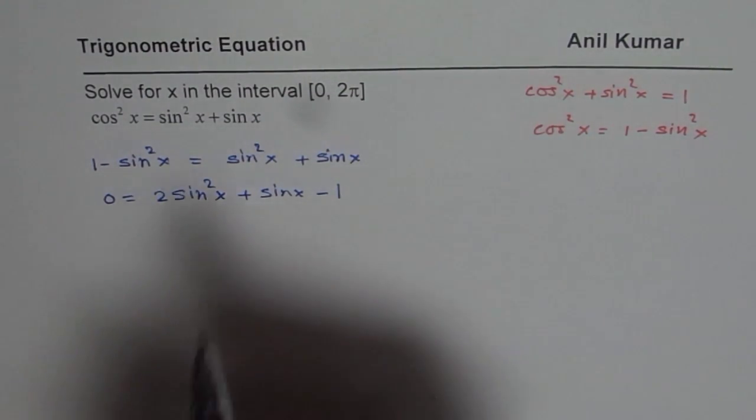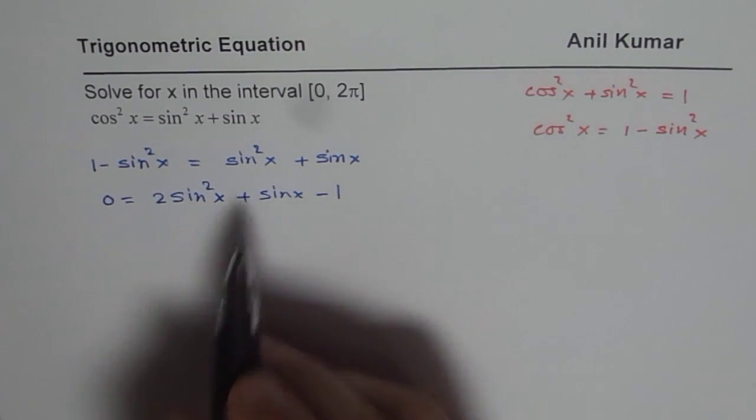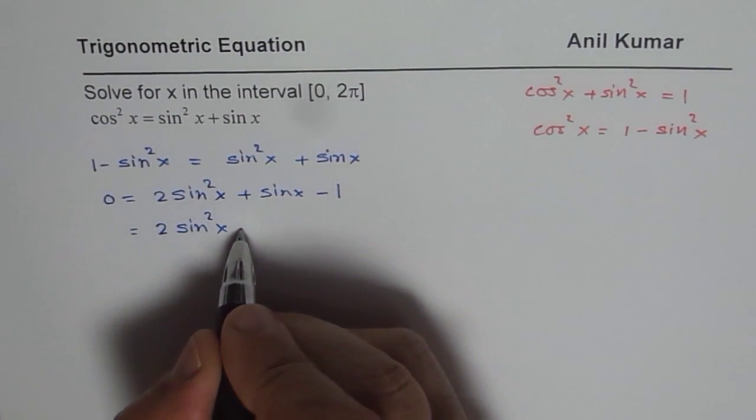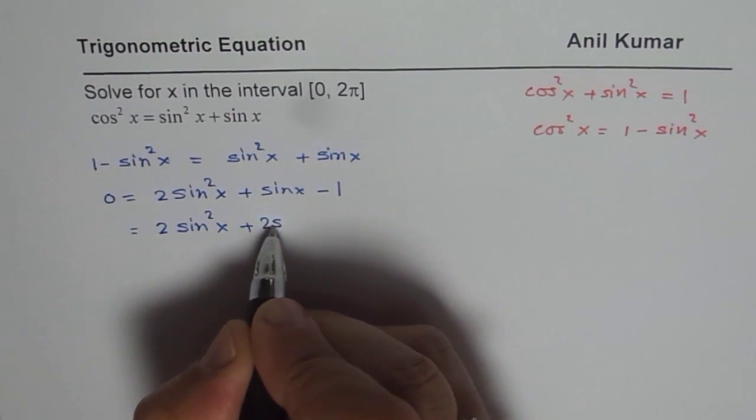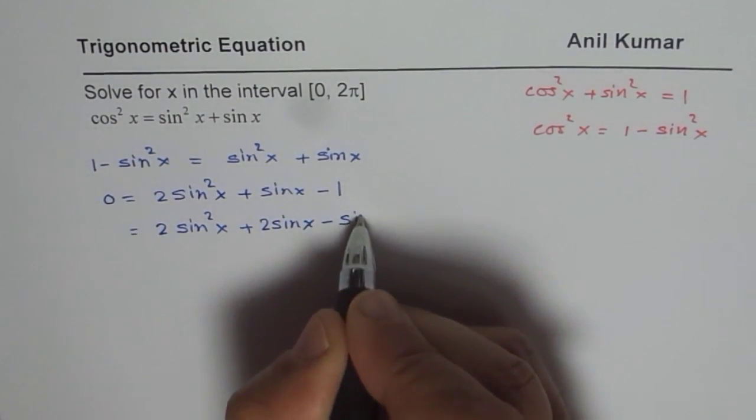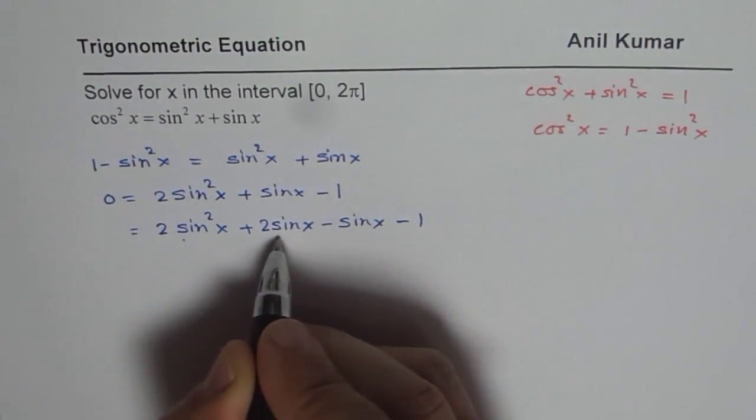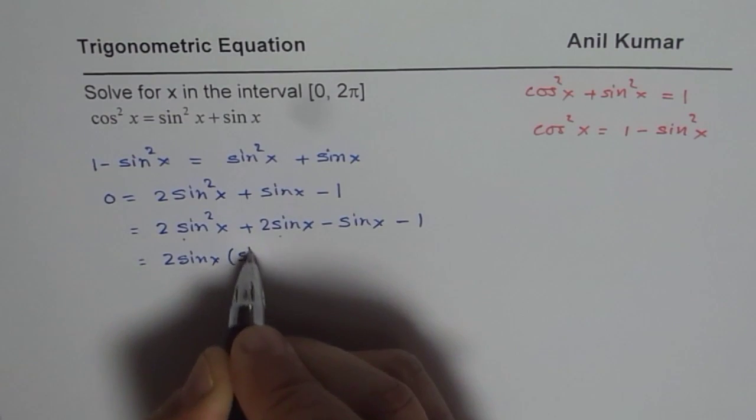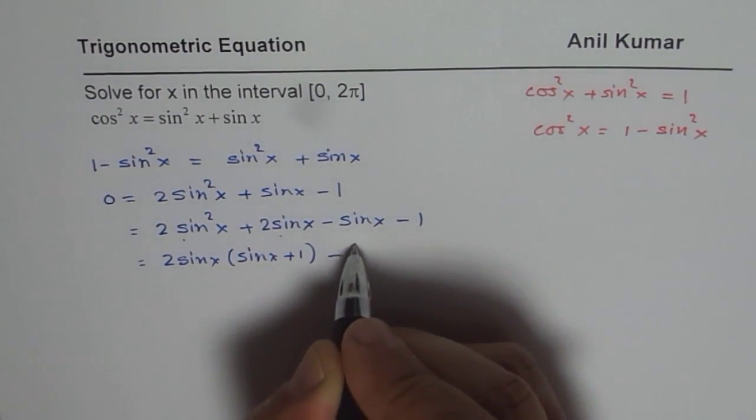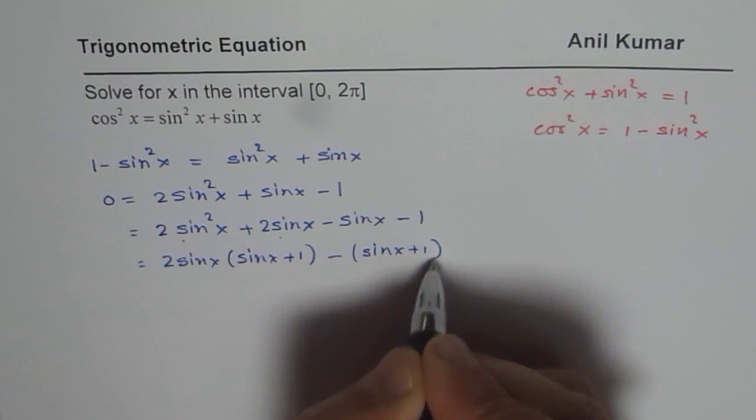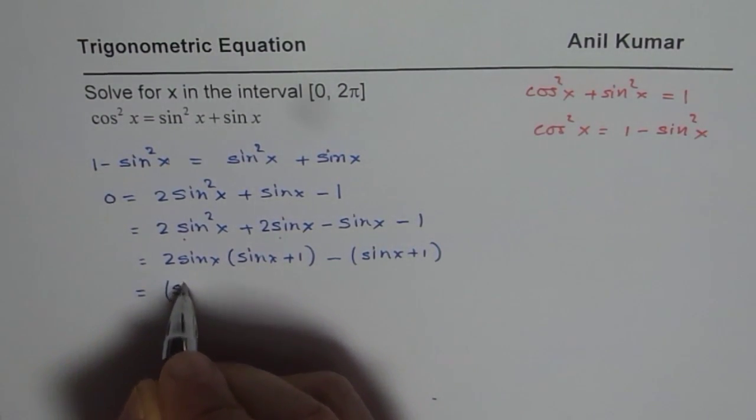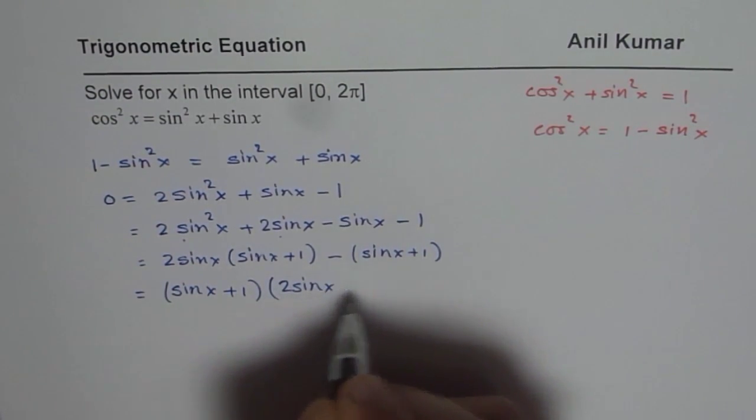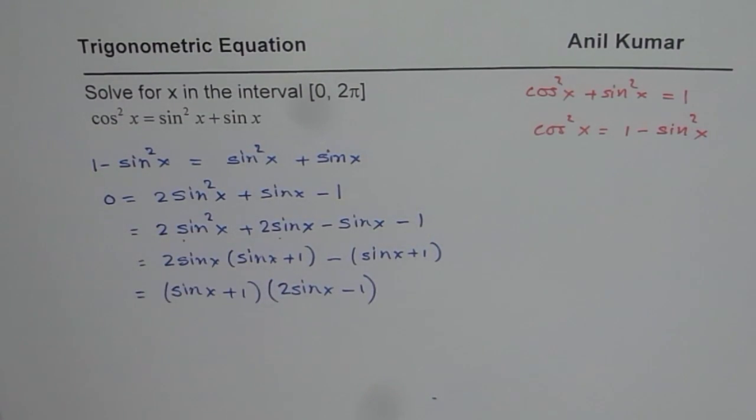Now this could be factored. We are looking for a product of minus 2 and sum of plus 1. So we could write this expression on the right side as plus 2sin x minus sin x minus 1. Considering these two, we can take 2sin x common. So we have sin x + 1 minus sin x + 1. Now we can take sin x + 1 common. And we get 2sin x - 1. And all this is equal to 0.